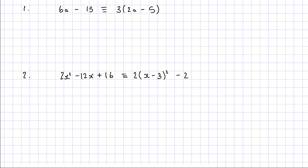This video is on identities. Here I have 6a minus 15 is identical to 3 times 2a minus 5.